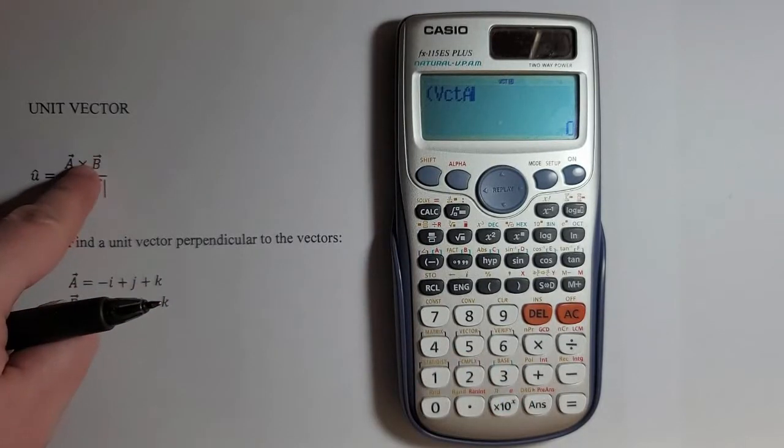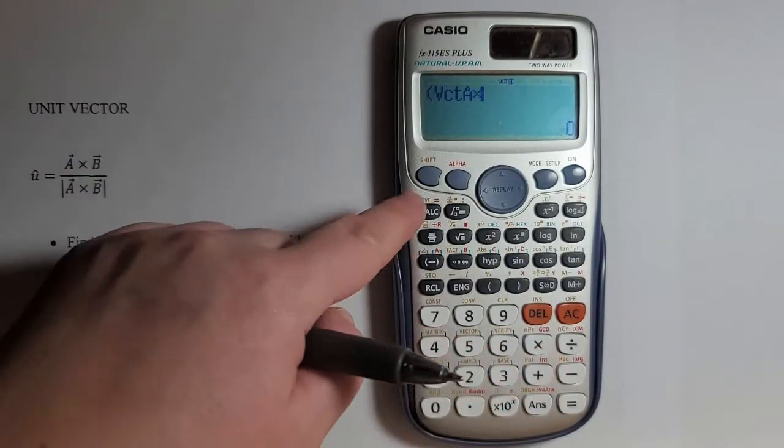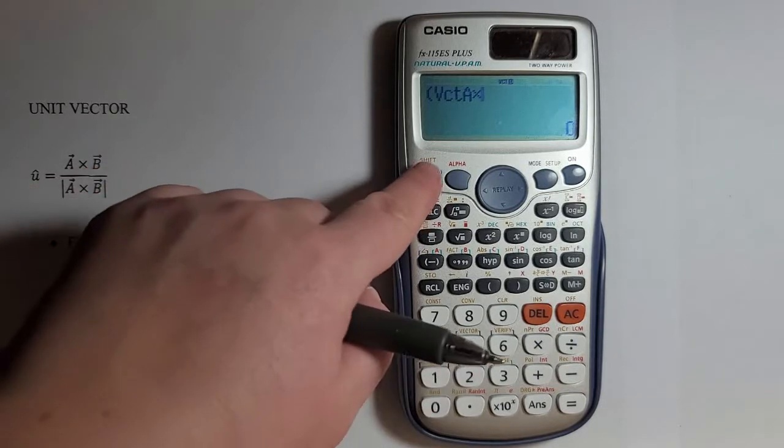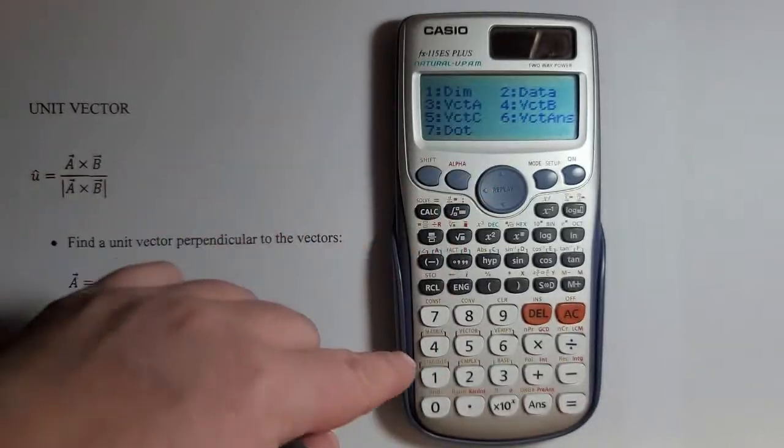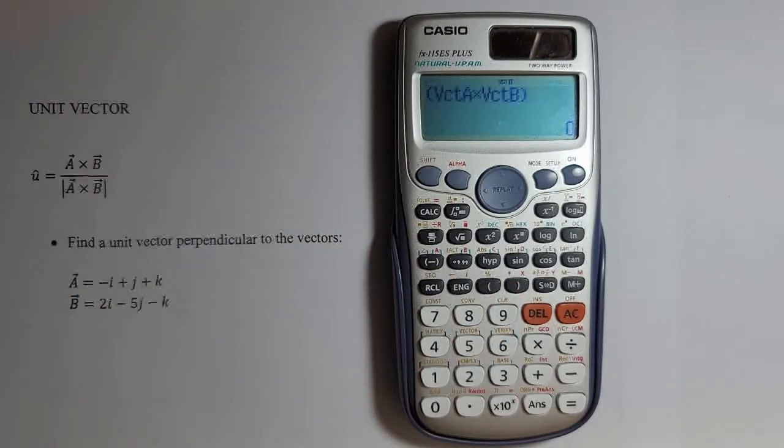We have a cross product with vector b. So shift again, 5 for vector, and now 4 for vector b. I'll close the parentheses.